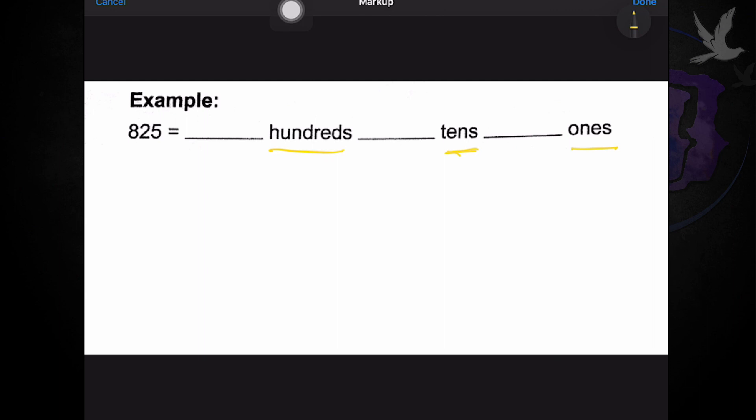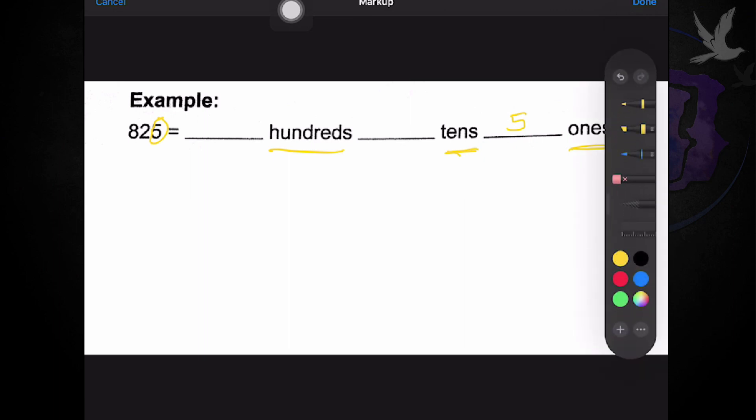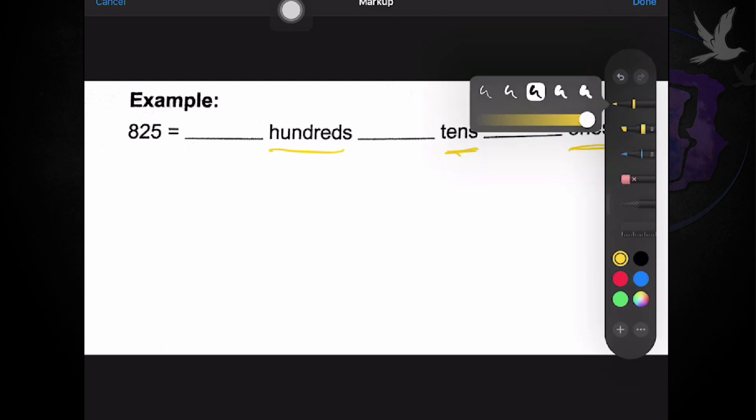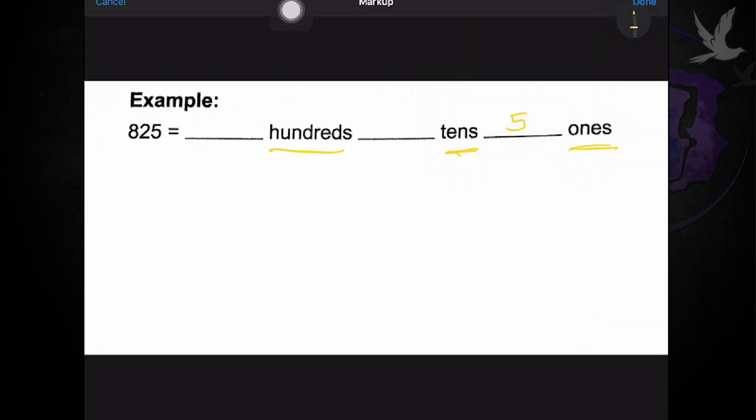So, for the hundreds, or as a beginner, we can start at ones. For our ones, we have five. For our next place value, which is tens, we have two.